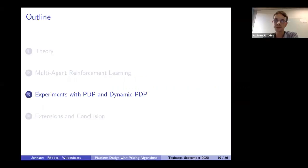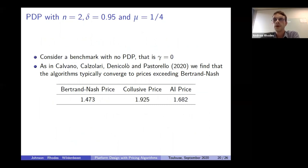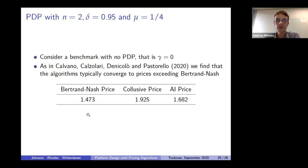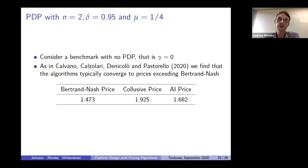In the paper we run many experiments; here I'll pick out a few to give a flavor of the results. I'll focus on a setting with two firms, a discount factor of 0.95, and logit parameter of one quarter. As a first step, with no platform intervention — gamma equals zero — simple computations show the Bertrand Nash price is about 1.5 and the fully collusive price would be about 1.9. When we run our algorithms, they settle on a price of about 1.7 — roughly halfway between competition and collusion — very much in line with the results of Calvano and co-authors.